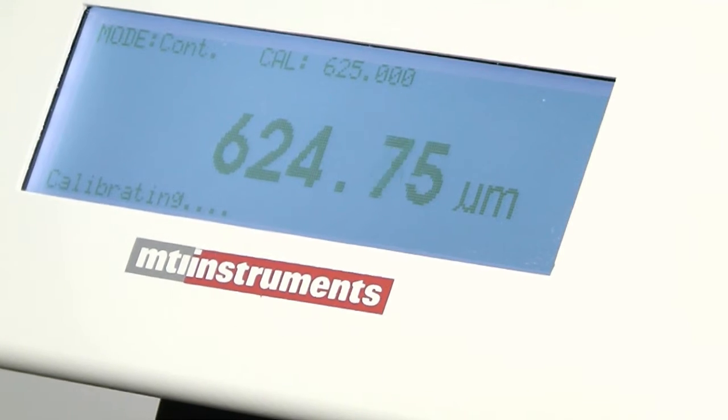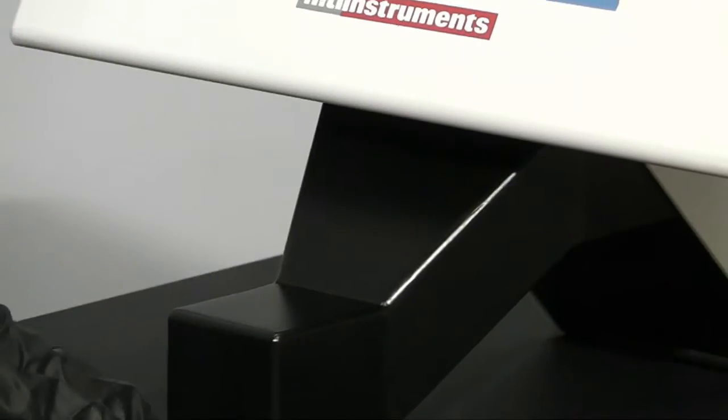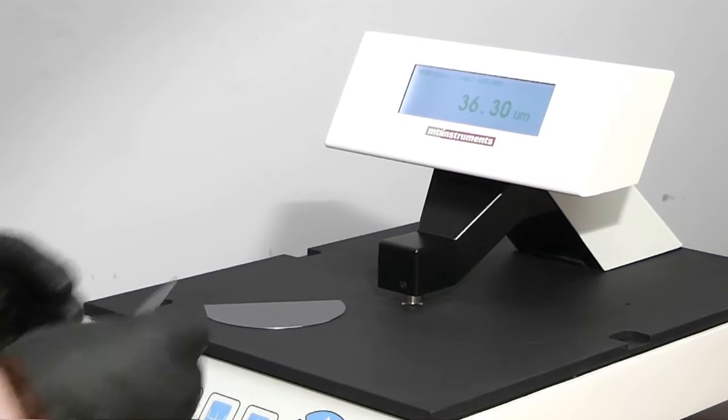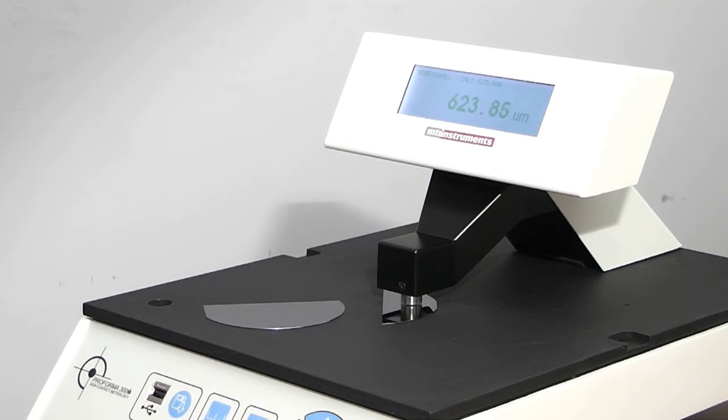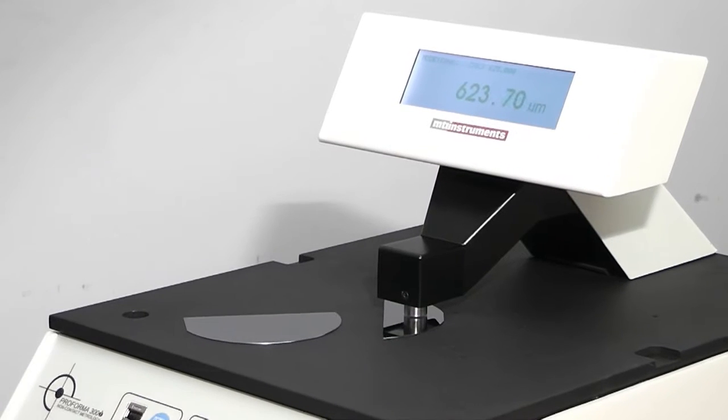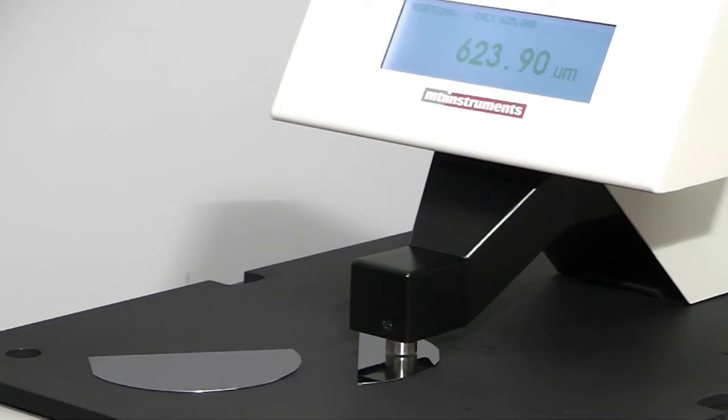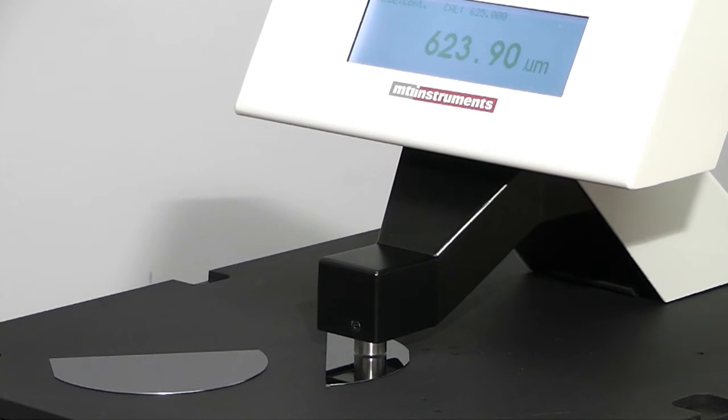All right. So now we're reading 625 microns. We'll take a quick look at the other side of this sample that is broken off, and we can see that we're reading 600 and 24 microns, okay? So it's the sister piece, same process, so they should read the same. And that's how you would set up to do a calibration with an insulating wafer.